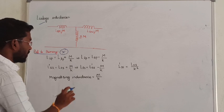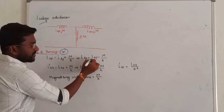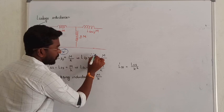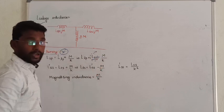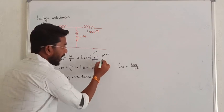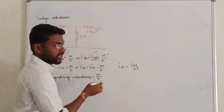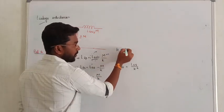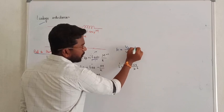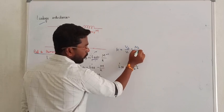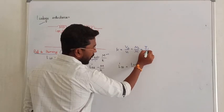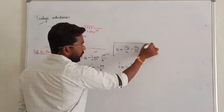The self inductance offered by the transformer referred to primary is defined. Next, mutual inductance of the transformer will be given, and k denotes the turns ratio. You can calculate k as e2 upon v1, or n2 upon n1 (number of turns), or i1 upon i2 (current ratio).